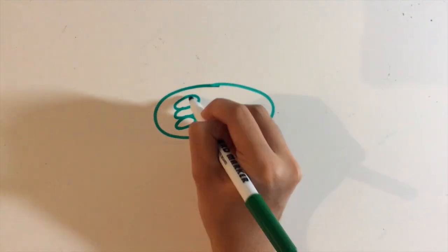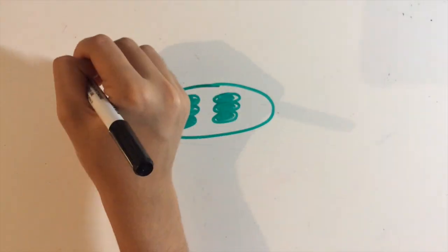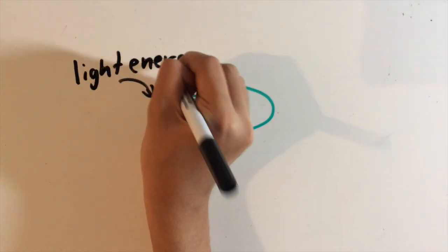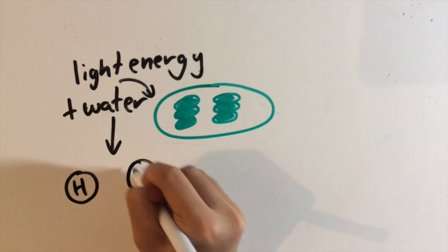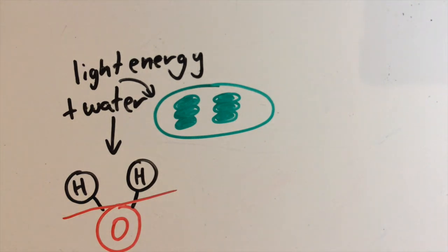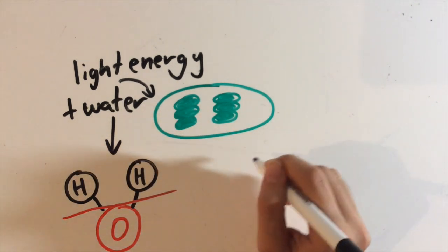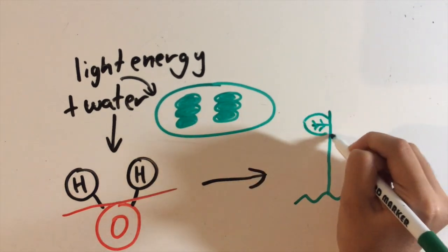Now chloroplasts need to split the water molecules that they have collected through the roots. The chloroplasts use the obtained energy from the sun. Once the water has been split into its two elements, hydrogen and oxygen, the oxygen is released as a waste product since it isn't needed anymore, through little pores in the plant's leaves called stomata. The oxygen that is released is the oxygen that we breathe in.